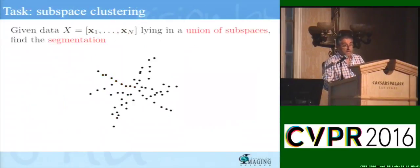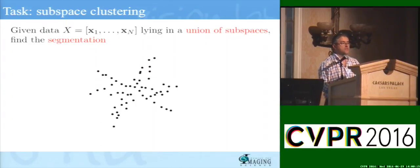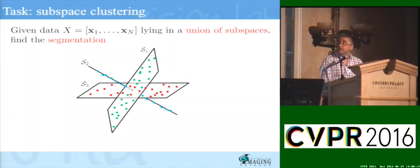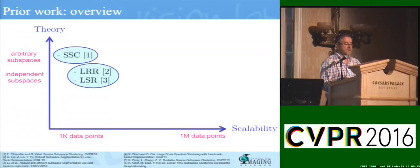More formally, the problem is the following: given a data set that lies approximately in a union of subspaces, and without knowing the dimensions and with the data potentially being corrupted in various ways, what you would like to do is to find the segmentation of the data. This is a problem that has been well studied over the past decade, and there are very nice algorithms that are able to solve this problem with very nice theoretical guarantees as to when the clustering is correct.